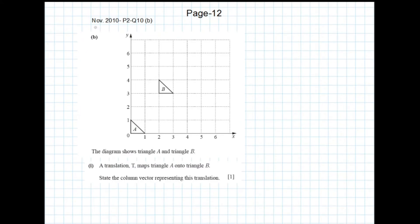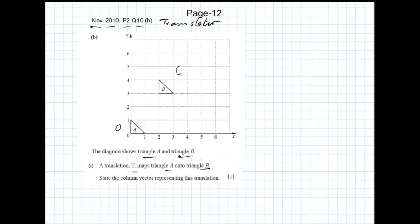This is another question from a past paper — November 2010 Paper 2, question number 10. The diagram shows triangle A and triangle B. A translation T maps triangle A onto B, so A is the object and B is the image. We are asked to state the column vector representing this translation.